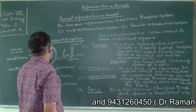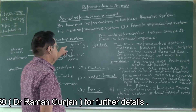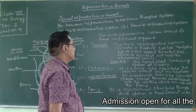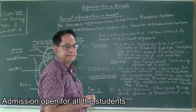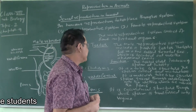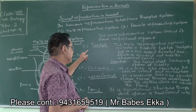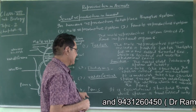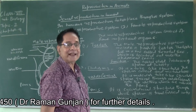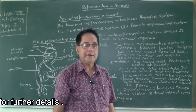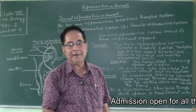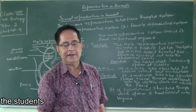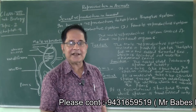The male reproductive system consists of some important organs. The important organs are testis, epididymis, vas deferens, and penis. All four organs constitute the male reproductive system. Let us study the structure and function of the male reproductive organs.